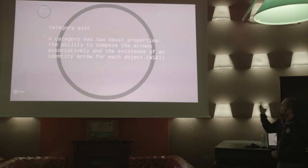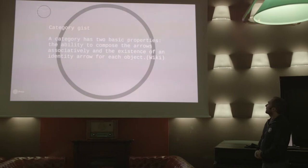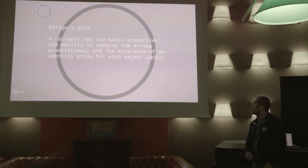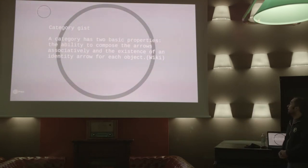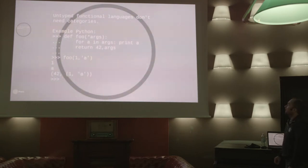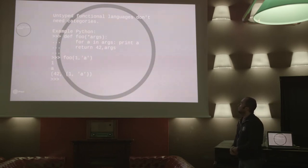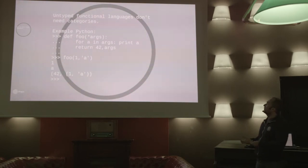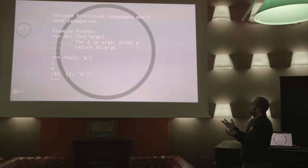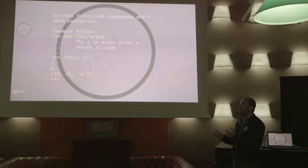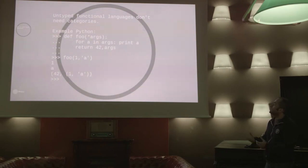From my perspective and from a programmer's perspective, category theory is something which allows us to compose arrows, whatever those arrows are. As we can see a little bit later, the arrows are more or less like functions. So why did I say that untyped languages are better? Because I can do everything with functions. The issue is that to compose two functions, these functions have to be somehow related to each other.